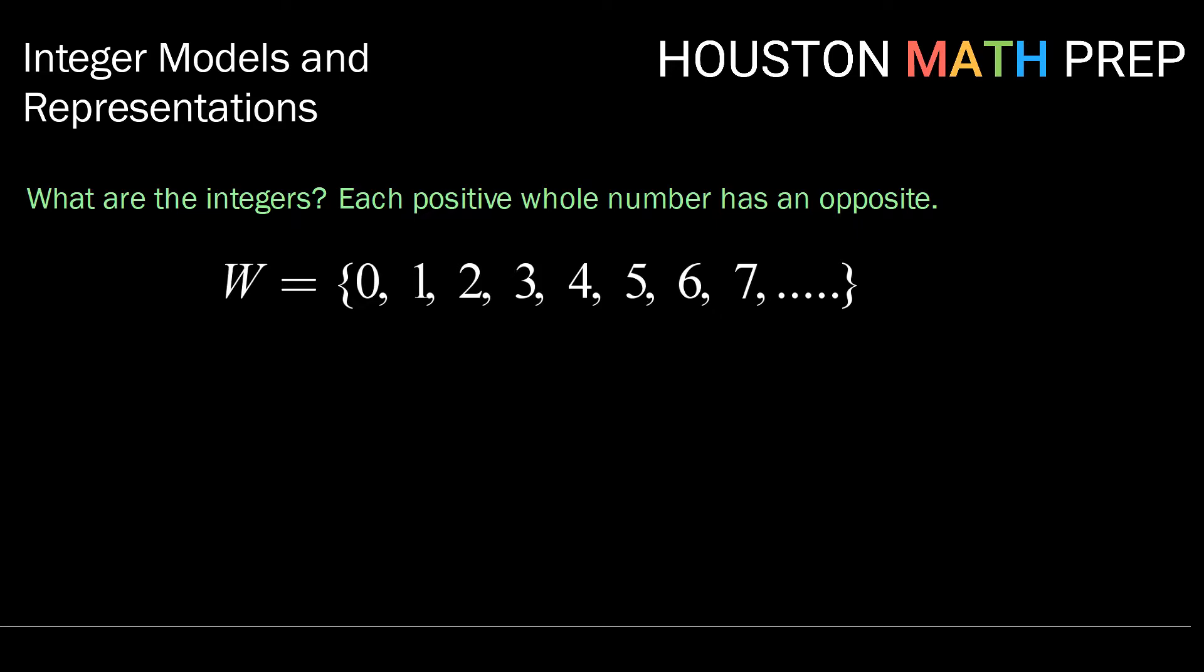To form the integers we want to recognize that each positive whole number has an opposite. By opposite we mean negative. So the opposite of 1 is negative 1 and we show negative by taking this little minus sign almost looking like it's up in an exponent position. 2 would have the opposite negative 2 and so on. Every positive counting number in the whole numbers has an opposite.